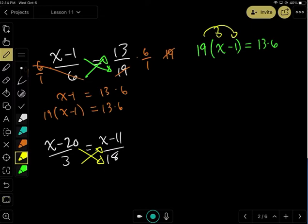But it'll be the same. We're just going to do the cross product. So we're going to do 18 times the quantity x minus 20 is equal to 3 times the quantity x minus 11.